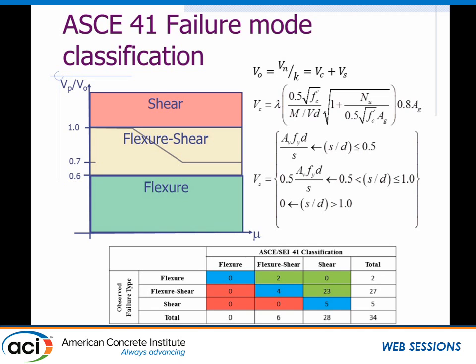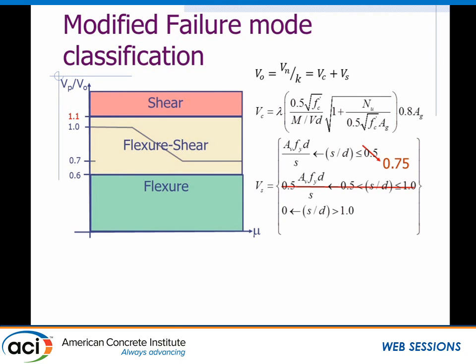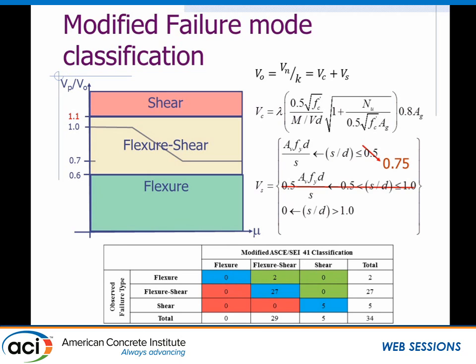The current classification scheme is perhaps over-conservative, so we'd like to modify it for a better match with observed failure modes. Following advice from Wasim, we change the decrease on the steel contribution to drop off after 0.75 and interpolate down to 1 — or you could remove it entirely. We also increase the flexure-shear range up to 1.1, because there's a lot of data just over 1 that gets heavily penalized. With these changes, we get a much better match with the observed failure modes.